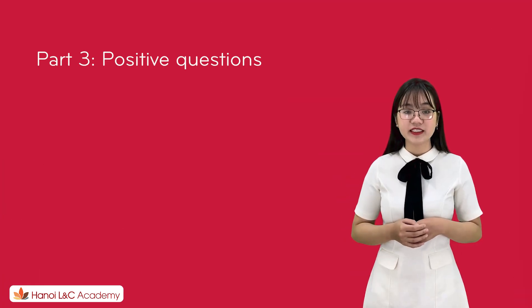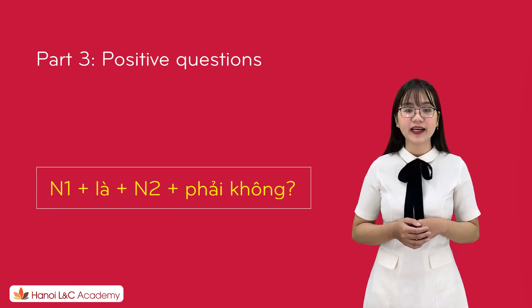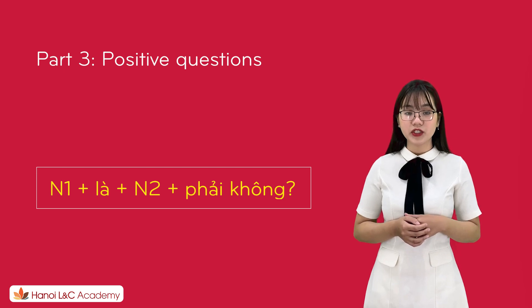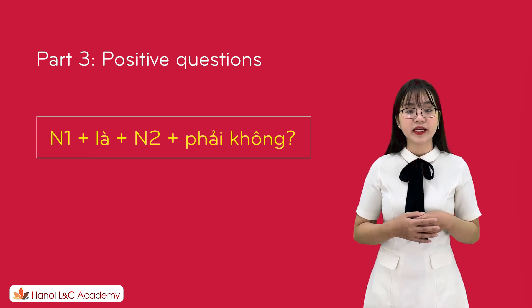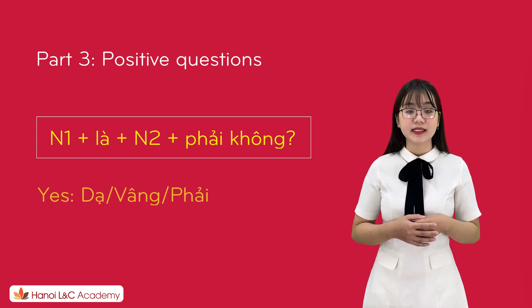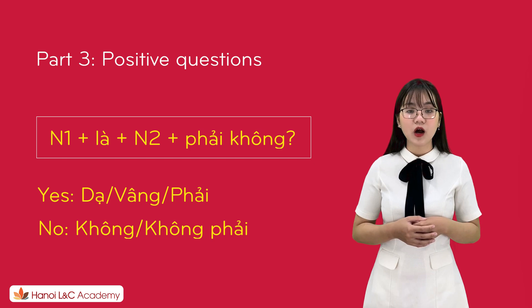Part 3: positive question. The structure is: Noun 1 + là + Noun 2 + phải không? In this question, we have two ways to agree or disagree. To agree: Dạ, Vâng, or Phải. To disagree: Không, or Không phải.